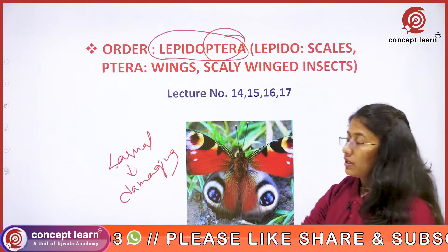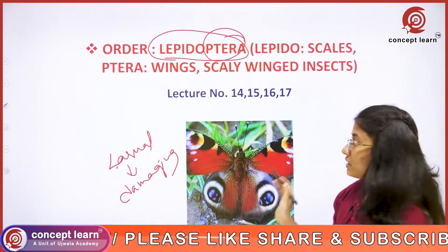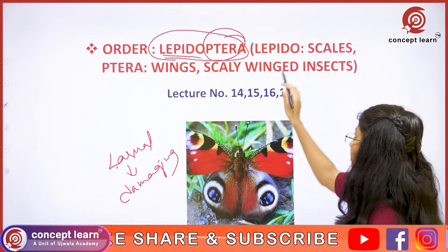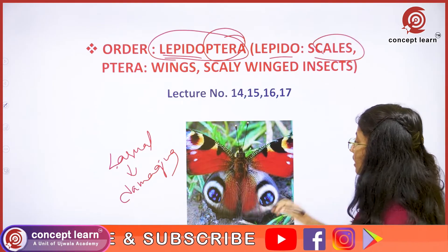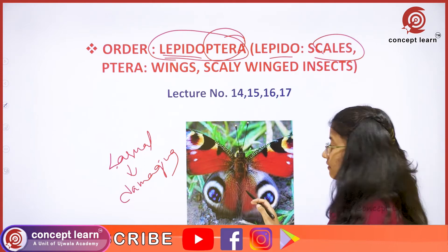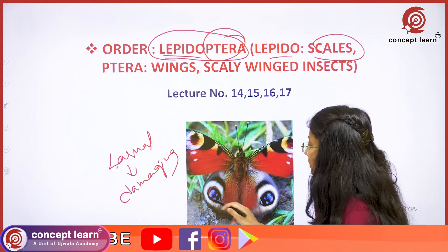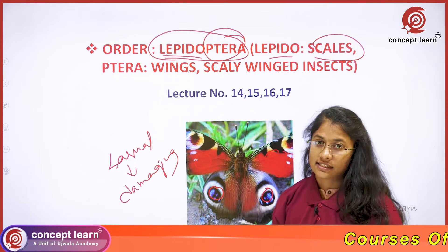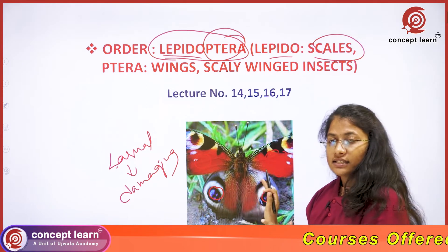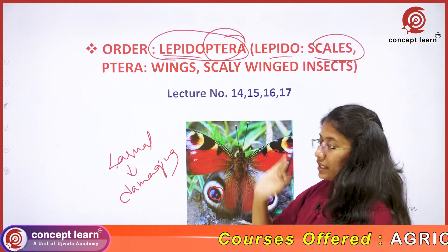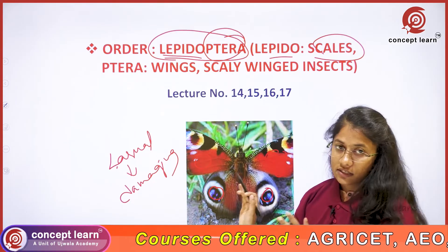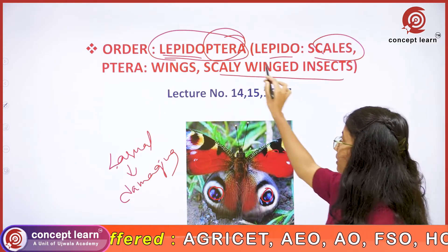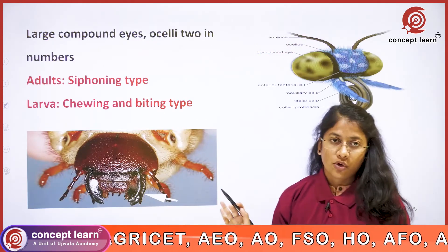In Lepidoptera, 'ptera' represents wings, and 'lepido' means scales. As you can see in this butterfly, there are different scales forming beautiful colored patterns. This is the specific feature of this order, and they are known as scaly-winged insects.